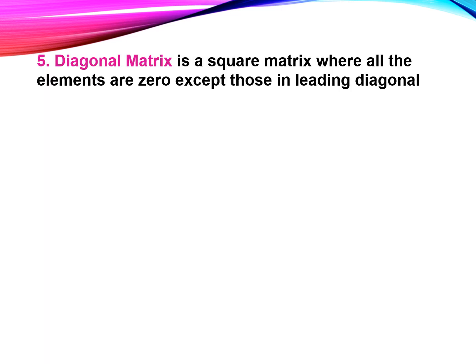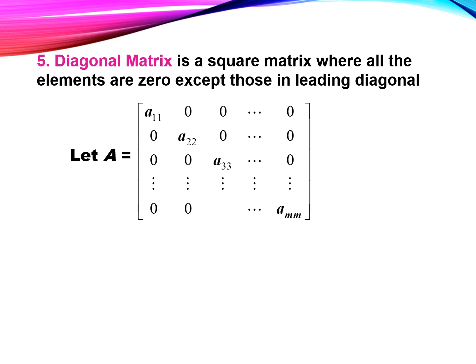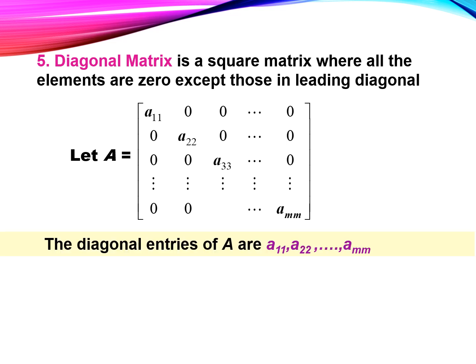Number five, diagonal matrix. A diagonal matrix is a square matrix whose elements not on the leading diagonal are zeros. Let matrix A — the diagonal entries of A are A11, A22, A33, until AMM.